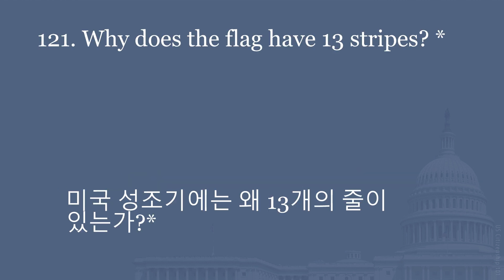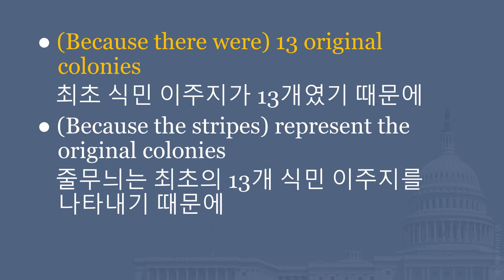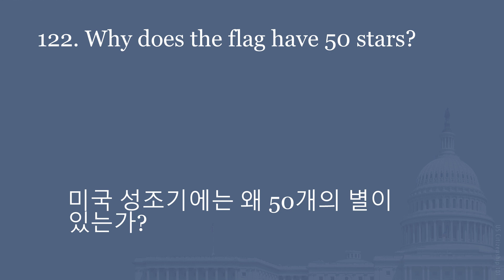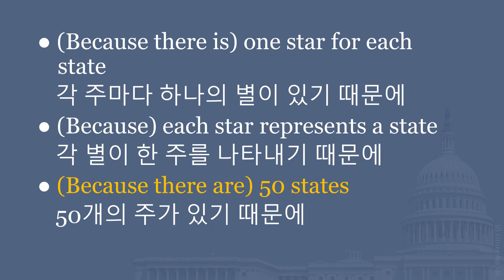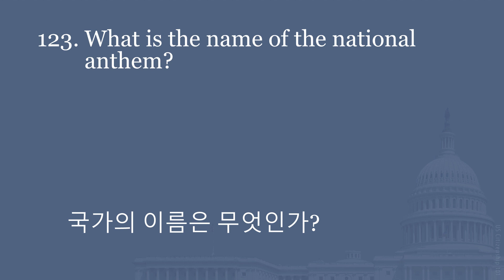Why does the flag have 13 stripes? Because there were 13 original colonies. Because the stripes represent the original colonies. Why does the flag have 50 stars? Because there is one star for each state. Because each star represents a state. Because there are 50 states. What is the name of the national anthem? The Star-Spangled Banner.